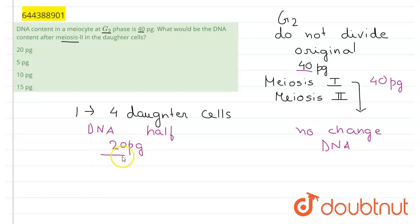If we see our options here, the first option, 20 picograms, is the right option because DNA material is only divided one time whereas the cells divide two times. So the chromosome number will be each cell will have 10 chromosomes, so n equals 10 here.